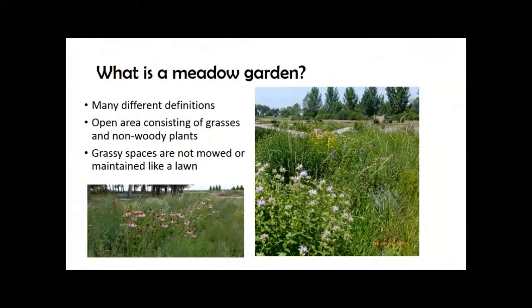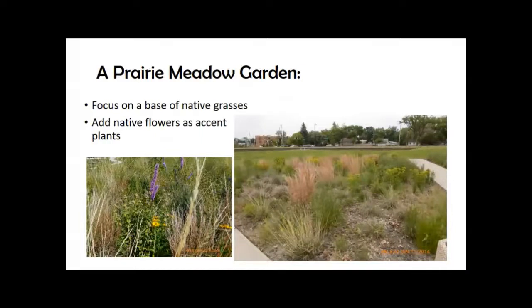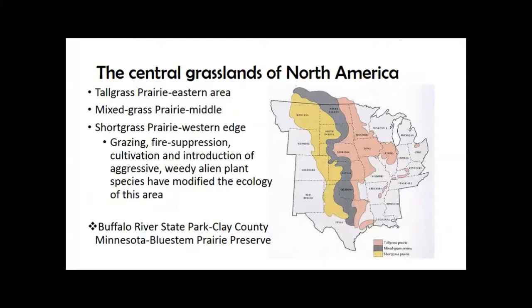Tonight we're going to talk about what meadow gardens are and how they get established, then look specifically at what we have at NDSU. A meadow garden is basically an open area with grasses and non-woody plants that's not mowed or maintained like a lawn. A prairie meadow garden specifically focuses on grasses with native prairie plants as accents. You could also have woodland or wetland meadow gardens, but tonight we'll focus on prairie areas.